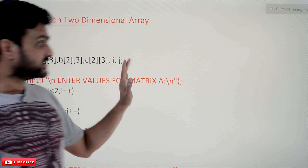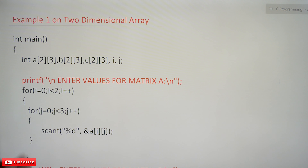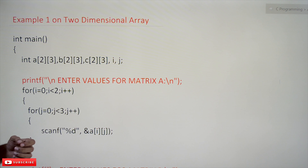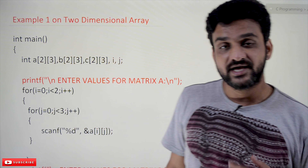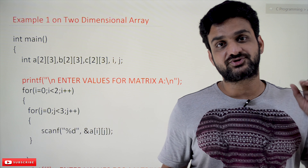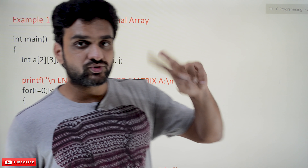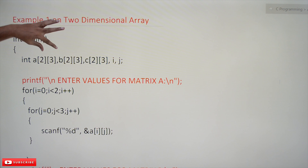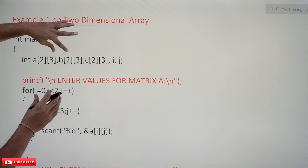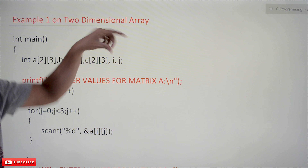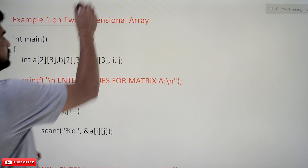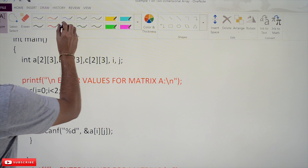This example is a matrix addition. The kind of matrix we have taken is a 2x3 matrix, which means two rows and three columns. We have taken two 2x3 matrices — A and B — to enter values, and a third matrix C to store the sum, which is the result of the addition of A and B.